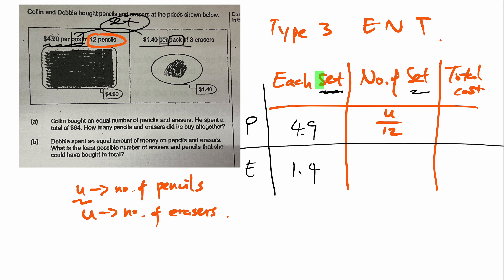If this is cost per each set, it has to be multiplied by number of sets. So the total cost for pencils is $4.90 times (U ÷ 12), which gives 49 over 120 times U. For erasers, they say 3 erasers per set, so it's U divided by 3. The total cost is always 'each' times 'number,' so for erasers it's $1.40 times (U ÷ 3), which simplifies to 14 over 30 U, then further to 7 over 15 U.